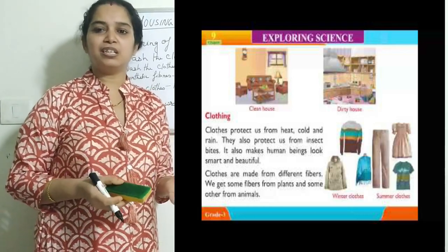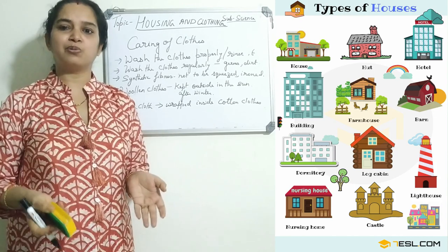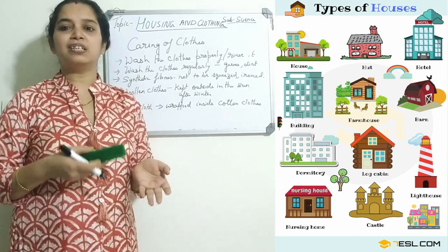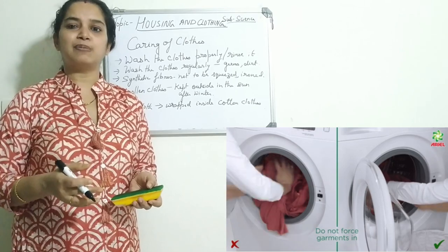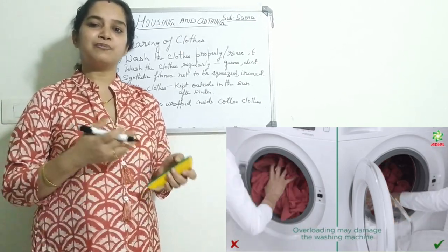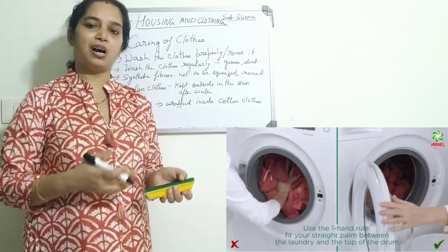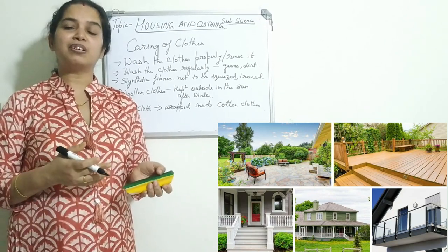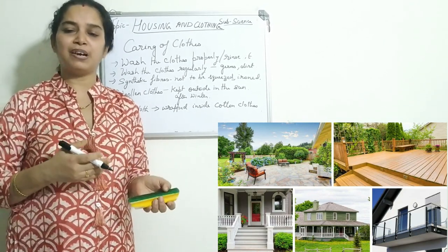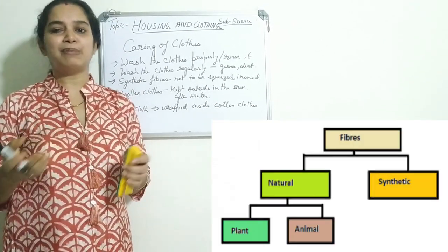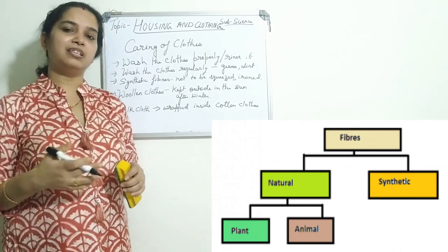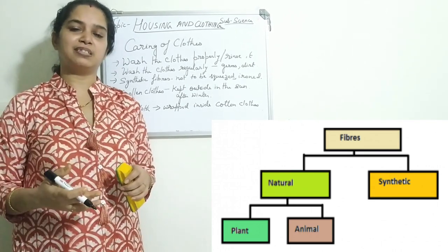So these are all about housing and clothing. Today we studied the different types of houses, the materials used in building them, the features of a good house, care of the house, care of clothes, and the different kinds of fibers — natural fiber and man-made fiber — and the clothes worn in different seasons. Thank you.